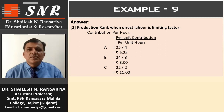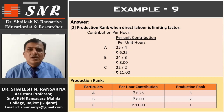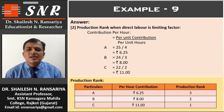On the basis of this per hour contribution, we give the production rank. Per hour contribution: Rs. 6.25 for A, Rs. 8 for B, and Rs. 11 for C. The highest contribution is in product C, so rank 1 is given to C. The second highest is in product B, so rank 2 is given to B. The lowest is in product A, so the third rank is given to product A.